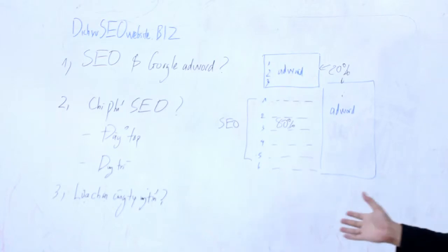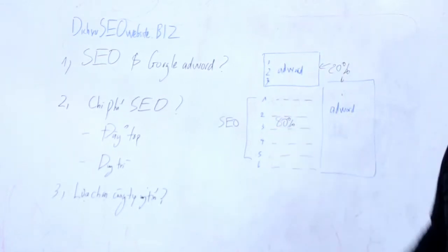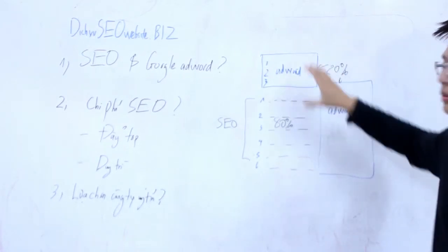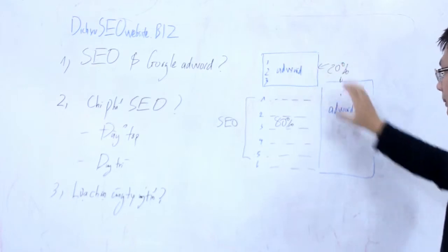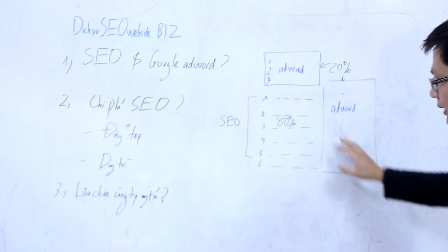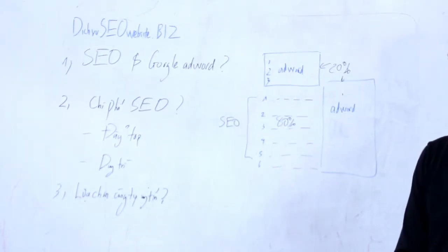The most important thing is when you compare the price of AdWords and the price of SEO. Generally speaking, AdWords gets about 20% of the clicks, and SEO gets about 80% of the clicks.